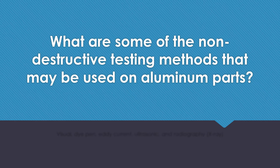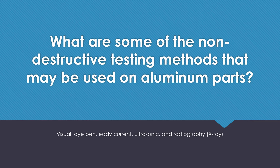What are some of the non-destructive testing methods that may be used on aluminum parts? Visual, dye pen, eddy current, ultrasonic, and x-ray or radiography.